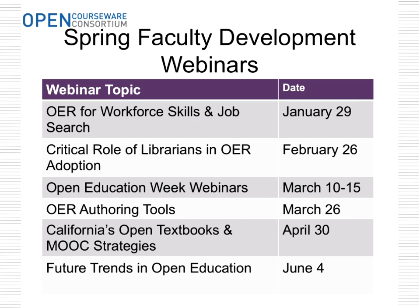Our spring webinars are archived on our website and available on YouTube. We have a couple more coming up later this spring: an OER authoring tool webinar at the end of March featuring Connexions, BC Campus open textbooks, and SoftChalk, which is a commercial tool for developing OER. At the end of April we'll hear about California's open textbooks and strategies and legislation. California is leading in some of these areas. And finally in June, we'll have a webinar on future trends in open education, keeping that one open since things are changing very rapidly.